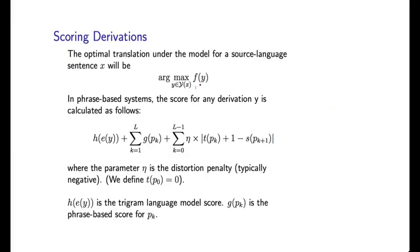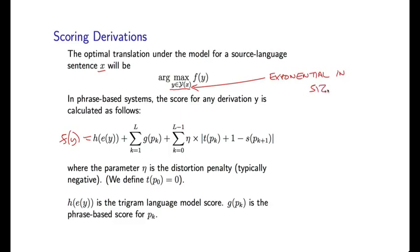So if we go back to this problem, this is the translation problem. We have an input sentence x. We're going to search through all possible derivations for the sentence. Each one has this score, so f of y is equal to the score shown before. We're going to try to find the highest scoring derivation. This set y is typically exponential in size, so certainly the brute force method of explicitly enumerating every possible derivation and then scoring it is in no way going to be feasible.